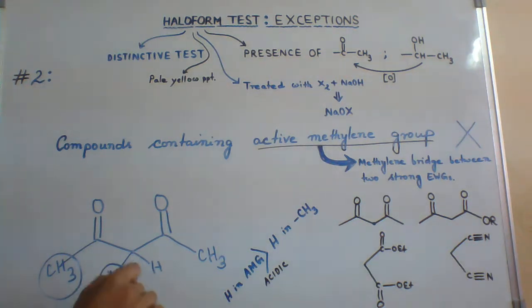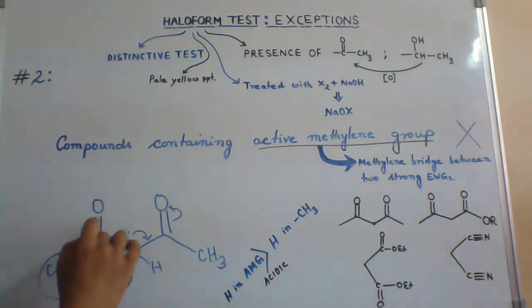If you treat with a base, base will readily pick up this proton and there will be a negative charge over here. And this will be in resonance with either of the ketonic group.